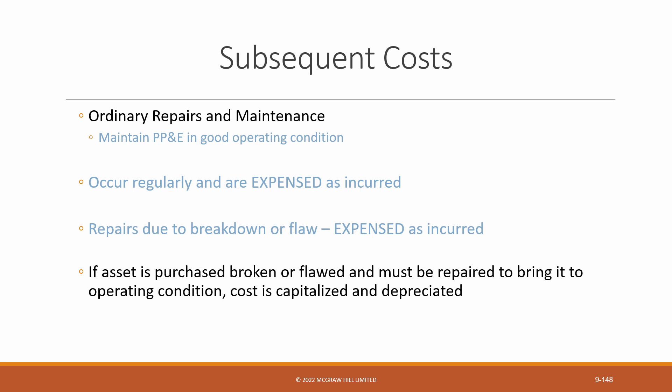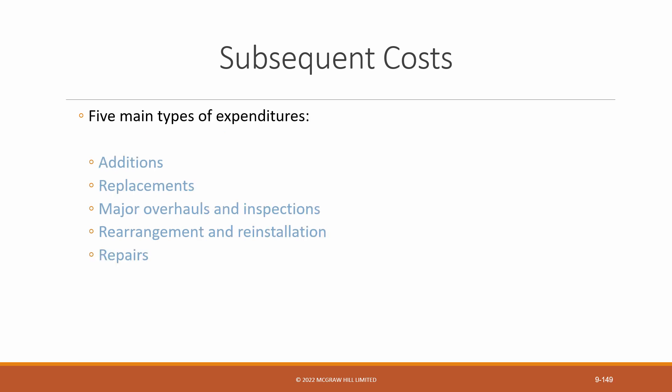What if an asset is purchased broken? In that case, the cost of the repair is capitalized as part of the cost of the asset, because the repair does improve the service potential of the asset. That's it for the five main types of post-acquisition costs, also called subsequent costs. Note that I will be providing two separate videos with examples of replacements and major overhauls and inspections.